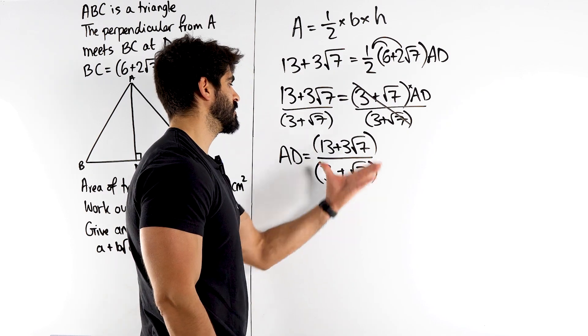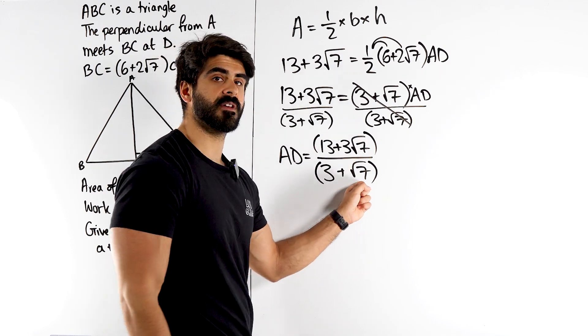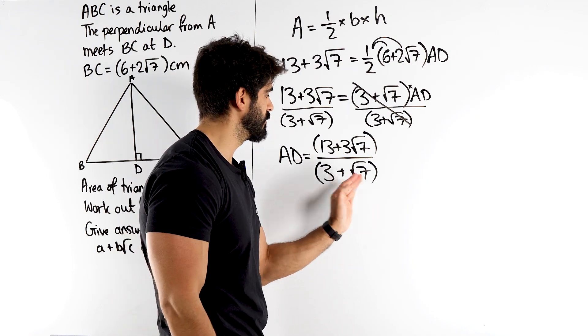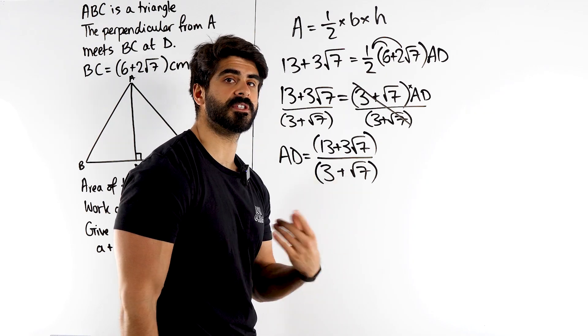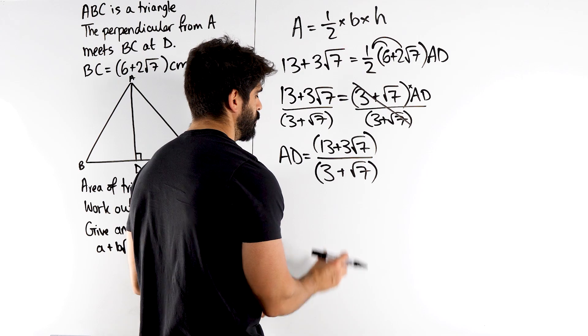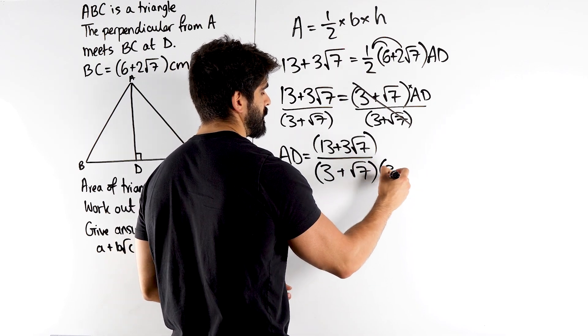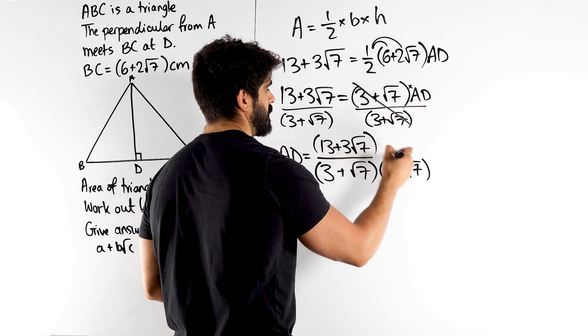And we're going to say, what do we need to multiply top and bottom by so that we don't have a root in the bottom? Well, there's no single root we can multiply the denominator by to get rid of just that root 7. So we opt for the difference of two squares principle, where we square this, square this. And we do that by multiplying it by itself, but changing the sign.